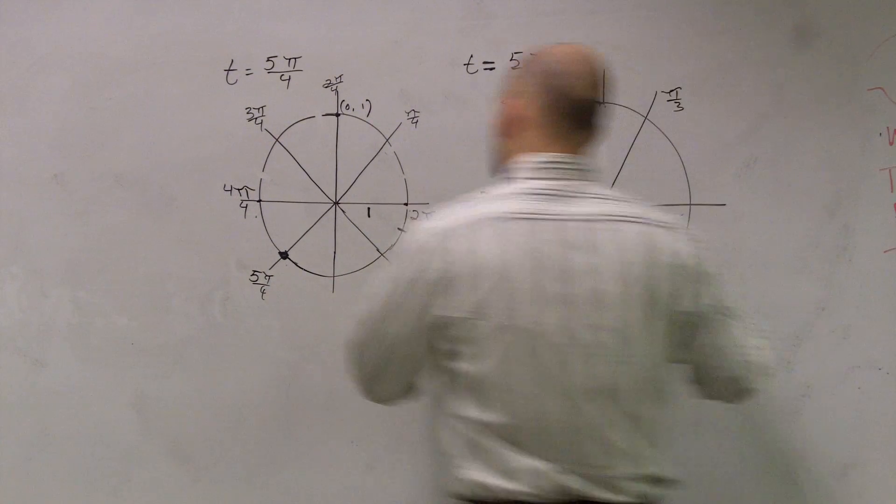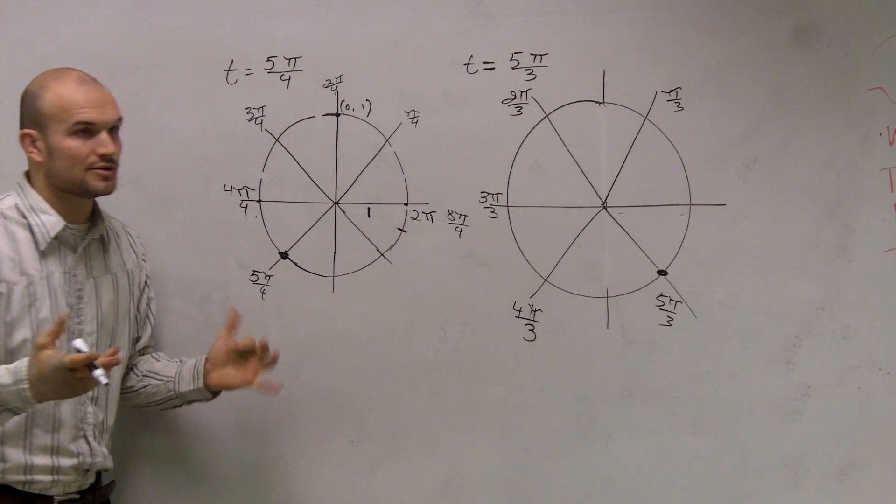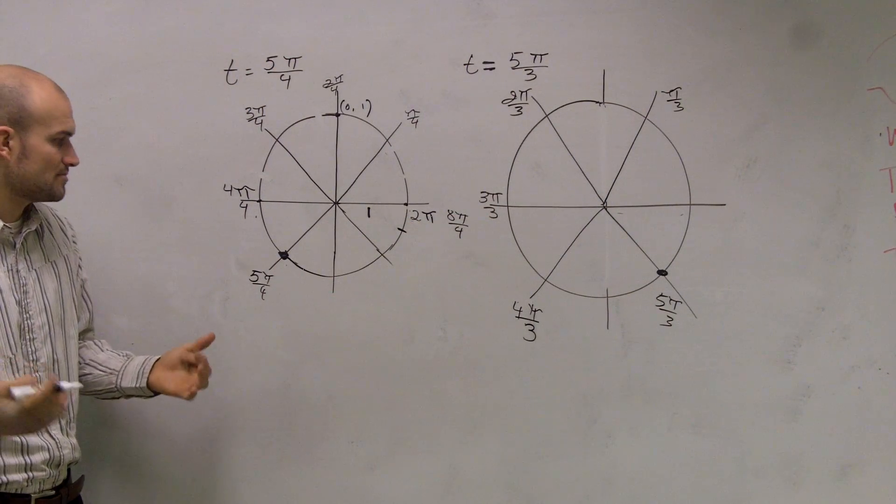All right, so you found your two points, right? Now the next thing you need to do is figure out what are the x and y coordinates for these points.